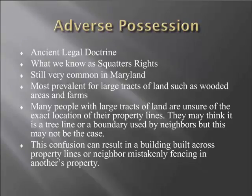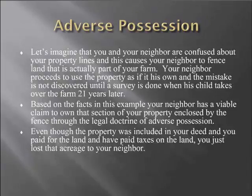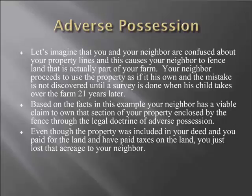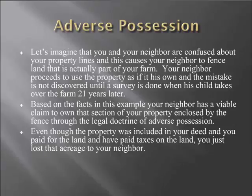Here's an example: let's imagine that you and your neighbor are confused about your property lines, and this causes your neighbor to fence in land that's actually part of your farm. Your neighbor proceeds to use this property as if it is his own, and the mistake is not discovered until a survey is done when his child takes over the farm 21 years later. Based on these facts, your neighbor now has a viable claim to own that section of your property through the legal doctrine of adverse possession — even though the property was in your deed, you paid for the land, and you've most likely been paying property taxes. You just lost that acreage to your neighbor.